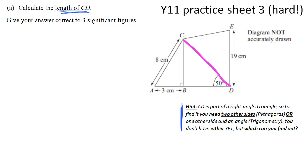So CD is part of a right-angled triangle. When you see that, if you want a length, that suggests you can either use Pythagoras, for which you'd need to know two other sides, or trigonometry, for which you'd need to know one other side and an angle. Which of those can we find out?